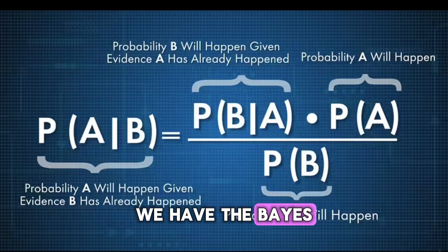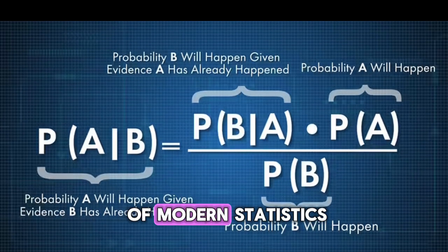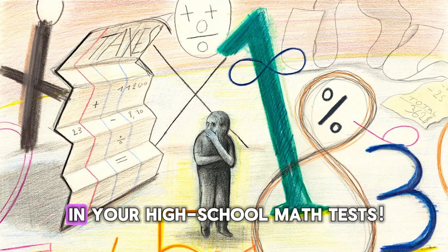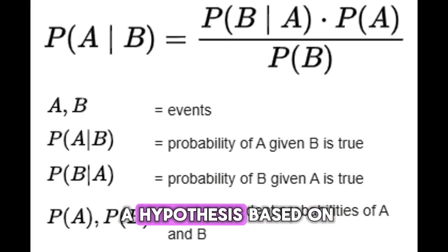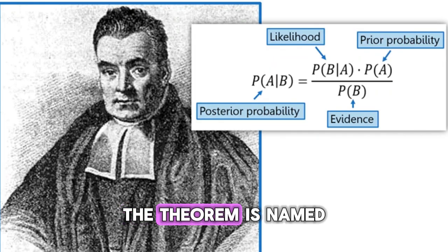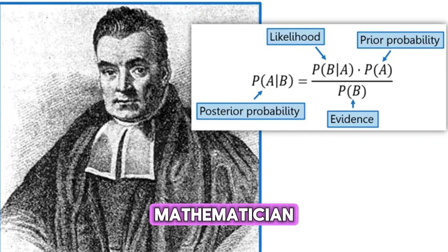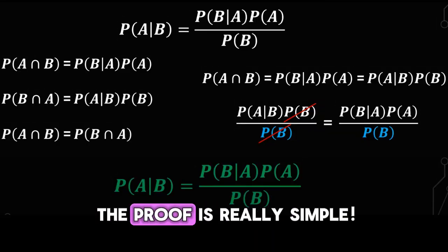Next, we have the Bayes theorem in number three, one of the cornerstones of modern statistics. Well, you may recall using this formula back in your high school math tests. It describes how to update the probability of a hypothesis based on new evidence. The theorem is named after Thomas Bayes, an 18th century mathematician. Even better is that the proof is really simple.